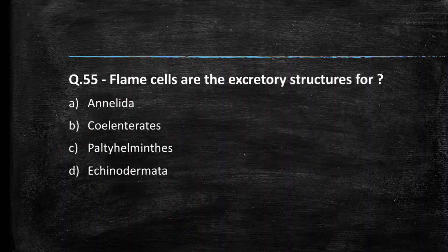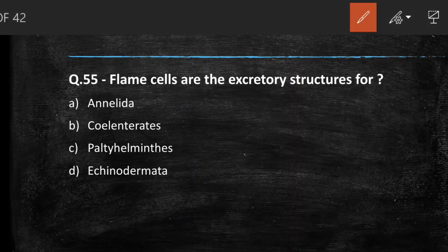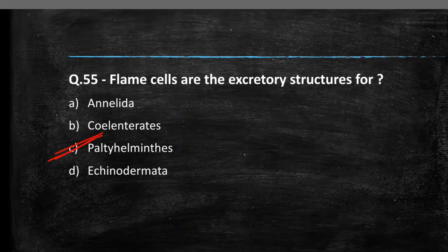Next question: flame cells are excretory structures for Annelida, Coelentrata, Platyhelminthes, or Echinodermata? The answer is Platyhelminthes. Flame cells are excretory structures in Platyhelminthes.